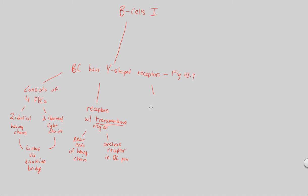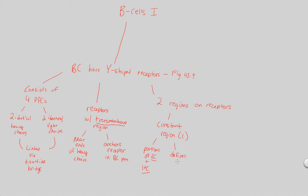There are two specific regions on the receptor important to understand for the overall function of B-cells. First, there is a constant region on the B-cell receptor, abbreviated as the C-region. This covers portions of both the light chain and the heavy chain, and it is the specific region that defines which type of B-cell you're looking at.